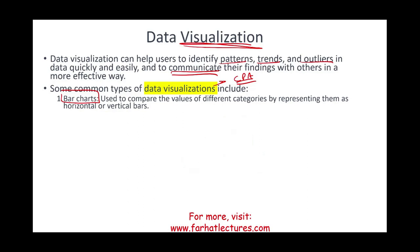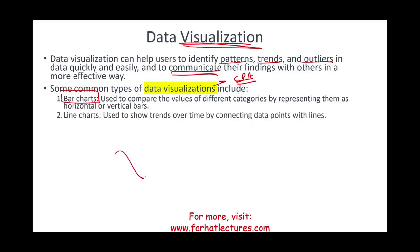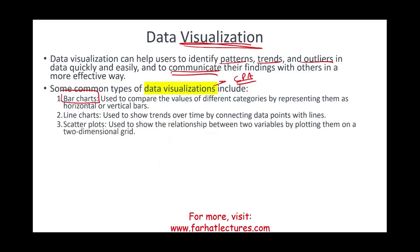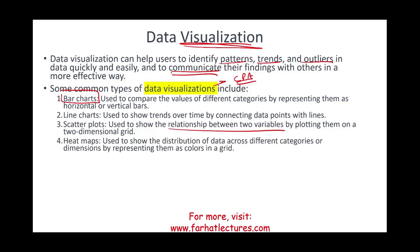A line chart is used to show trends over time by connecting data points with lines — basically showing what's happening over time. A scatter plot shows the relationship between two variables like X and Y, such as sales and marketing, by plotting them on a two-dimensional grid.